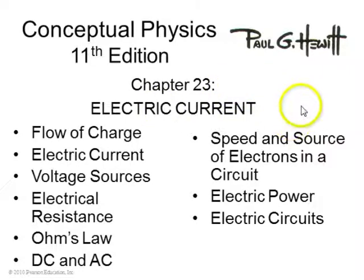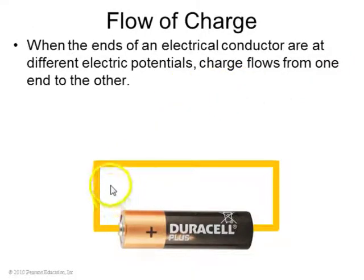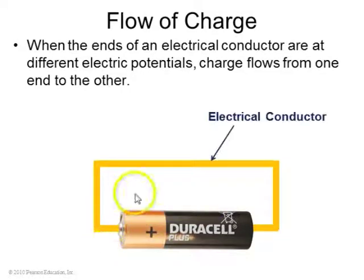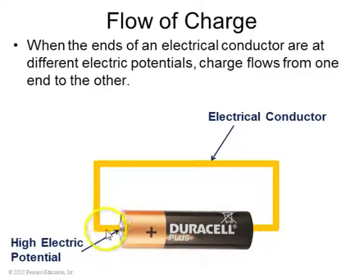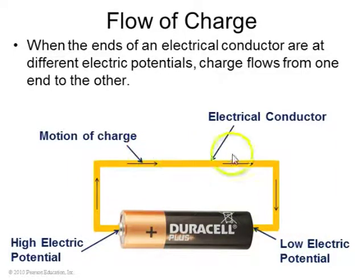Chapter 23 is on electric current. When the ends of an electrical conductor, like a metal, are at different electric potentials, charge flows from one end to another. Here's an electric conductor, a wire. This end is held at a higher electric potential, the plus end, and this end is held at a lower electric potential, that's the minus end. And so there's this motion of electric charge going from the plus towards the minus.